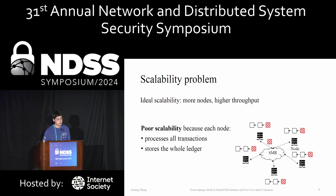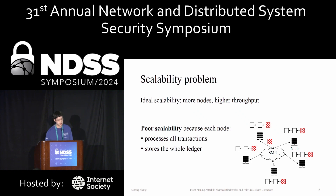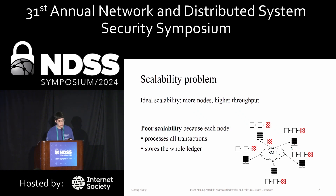However, the scalability problem limits the applications built on blockchain. For example, the early-stage blockchain system Bitcoin can only handle several transactions per second, which is far from satisfying practical requirements. This poor scalability comes from the fact that every node has to process all transactions and store the whole ledger, so even with more nodes joining the system, these newly-joining nodes do redundant work and throughput cannot be increased.